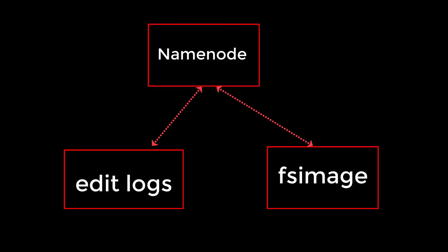Before understanding what a secondary name node is, we will see what are the challenges of the name node. As we know, the name node keeps the complete metadata information in memory. It also has persistent data stored in a file called FSimage and another file called edits. FSimage is the persistent in-memory copy saved to a file.